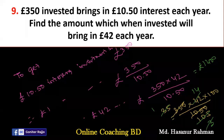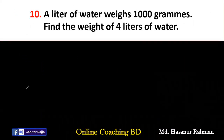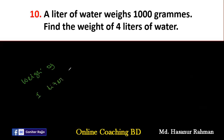Number 10: A liter of water weighs 1,000 grams. Find the weight of 4 liters of water. Weight of 4 liters is 4 multiplied by 1,000 = 4,000 grams.